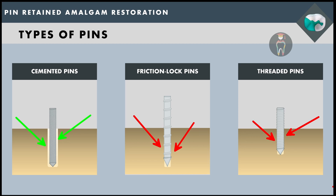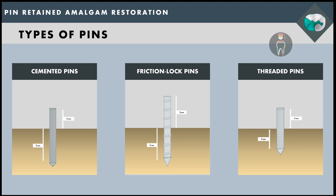Regarding pin lengths: for cemented pins, the pin channel should be at least 3 mm and the pin should protrude 2 mm outside the prepared tooth. For friction lock pins, if the pin channel is 3 mm, 3 mm of pin can also extend outside — making it more retentive than cemented pins. For threaded pins, 2 mm of pin channel is prepared and 2 mm of the pin protrudes out after placement.